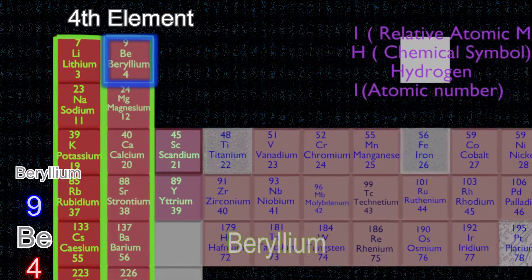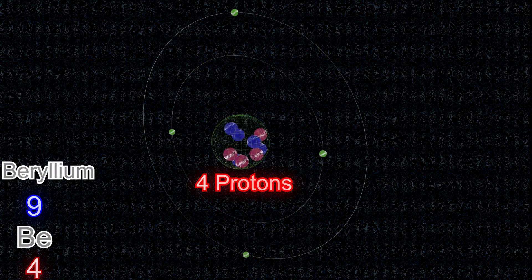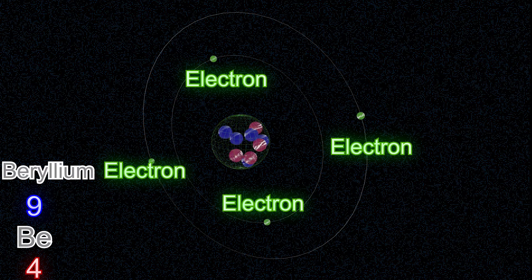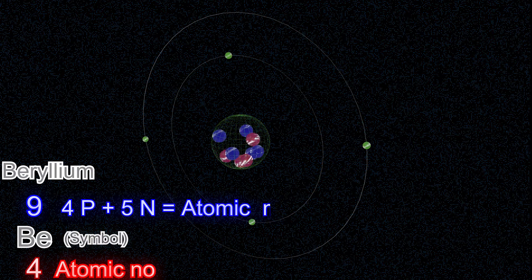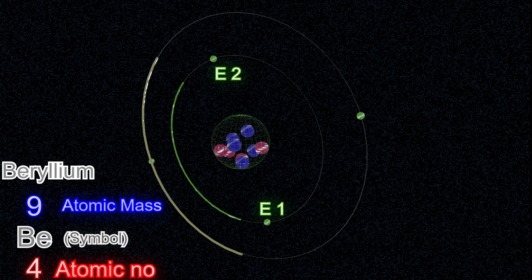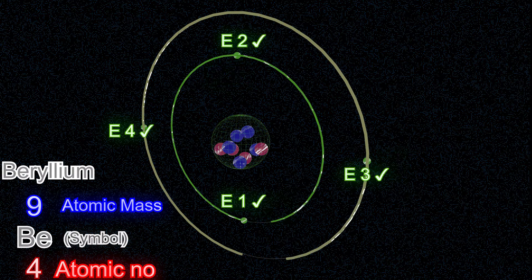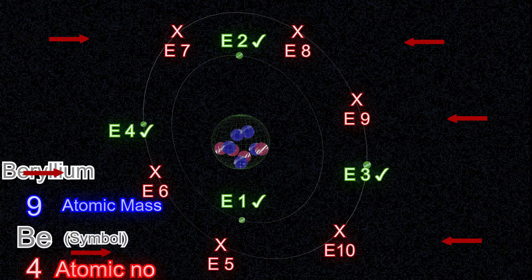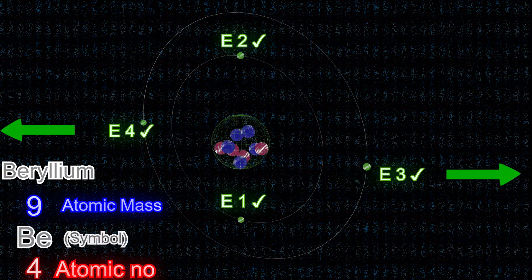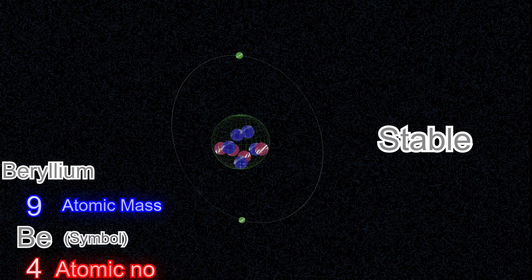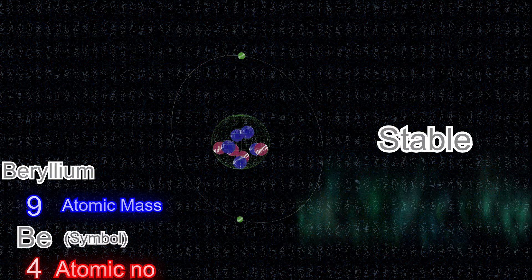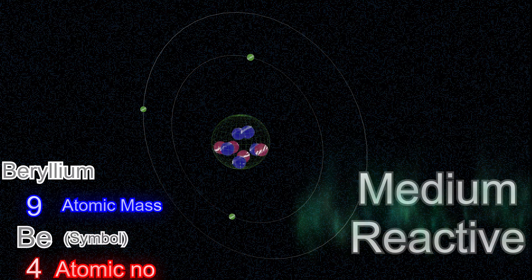Beryllium is the fourth element in the periodic table. Beryllium atom has four protons, five neutrons, and four electrons. Four protons means its atomic number is 4. Four protons and five neutrons mean its atomic mass is 9. Two electrons are in the inner shell and two electrons are in the outer shell. In theory, the outer shell can further gain six electrons or lose two electrons to make it a stable atom. Beryllium atom tends to lose the two electrons from its outer shell during the reaction and becomes stable. If it got rid of the outer electrons, it will only have the inner shell with two electrons making it stable. This tendency makes it only a mildly reactive metal.